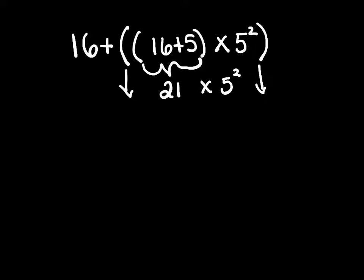Now within those parentheses, we're going to do the exponent first, then the multiplication. So the exponent 5 squared is 25. So now we have 21 times 25. If you type that into your calculator, 21 times 25 is 525.